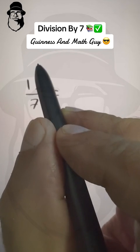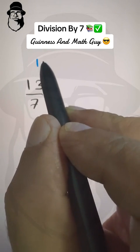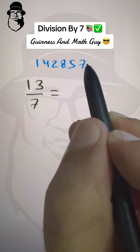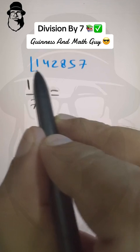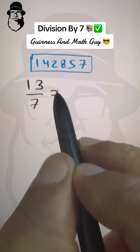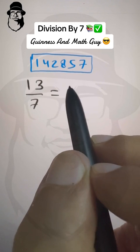Just memorize these 6 digits: 1, 4, 2, 8, 5, 7. These are 6 digits. It's not very difficult to memorize or remember.